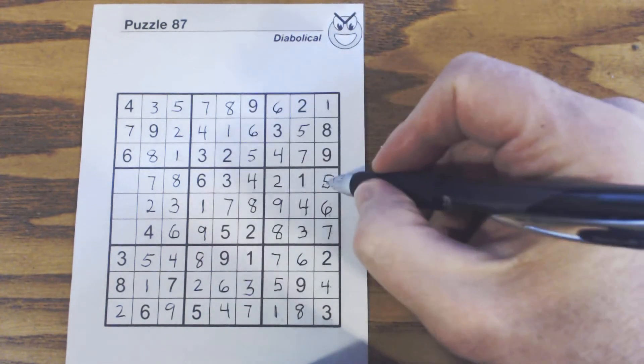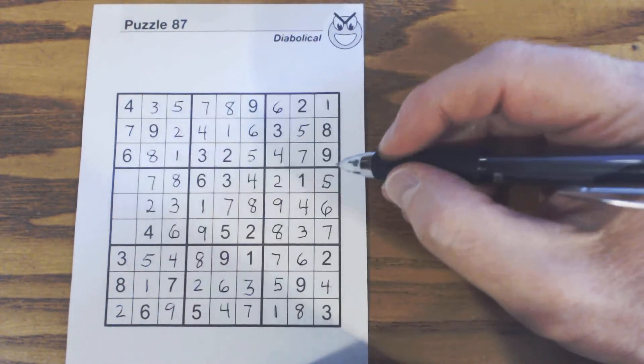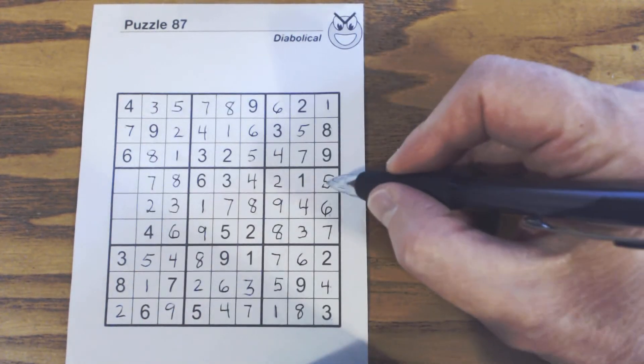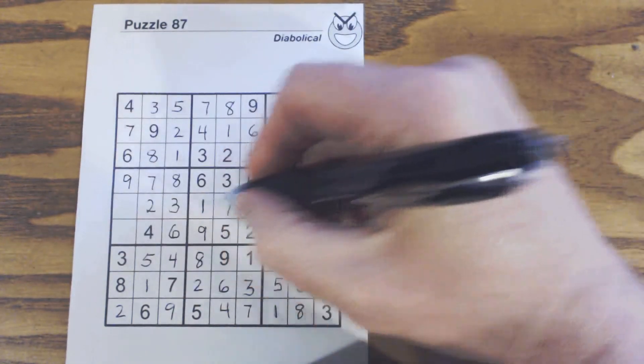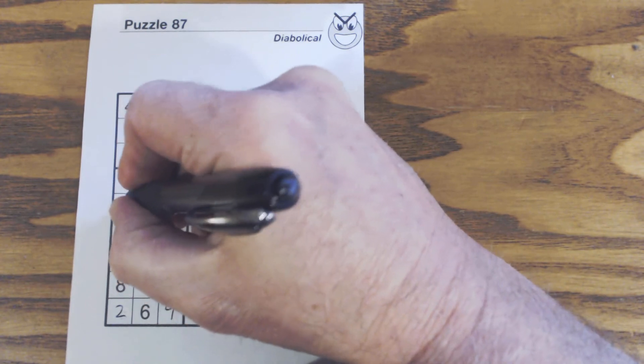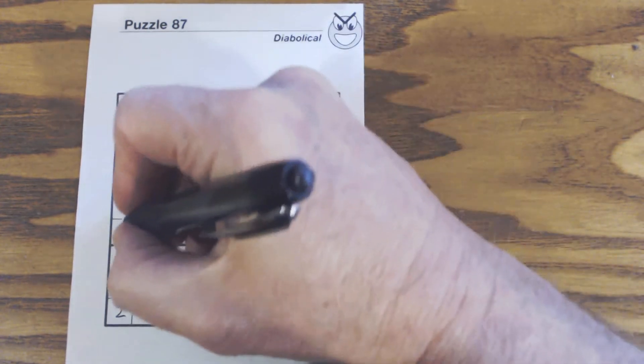And we can finish with 1 5 9s here. We have a 1 and a 5 there, so that's a 9. 1 and a 9 there, so that's a 5. And a 5 and a 9 there, so that's a 1.